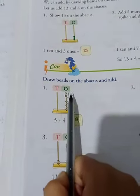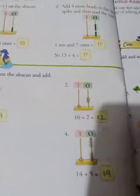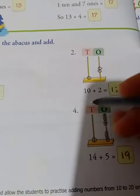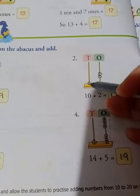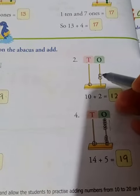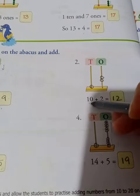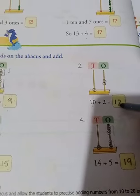Next, 10. Ten means in the tens place one bead, that means 10. And we add 2. So see, 1 ten and 2 ones. 1 ten and 2 ones equals 12.